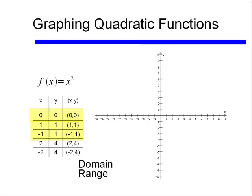This should all hopefully be review. If x is 0, y is 0. If x is 1 or negative 1, the output is 1, and if x is 2 or negative 2, the output is 4. And those points, connected together, give me a quadratic function. It's a parabola.